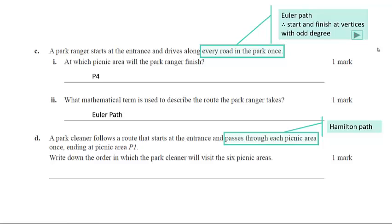Write down the order in which the park cleaner will visit the six picnic areas. Now note here they have to start at the entrance and have to finish at P1, so looking back at your graph there's only one possible pathway through. And now we've stated it there: entrance through P5 to P4 to P6, P3, P2, and finally P1.